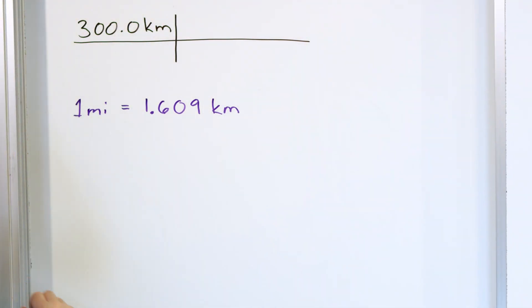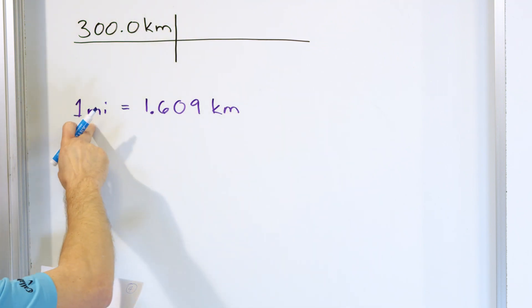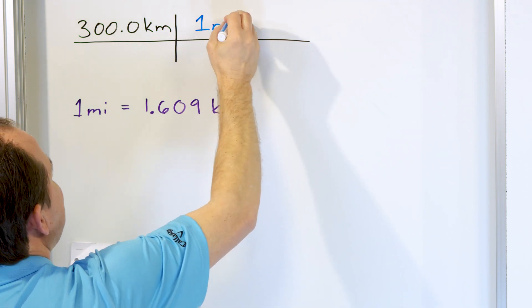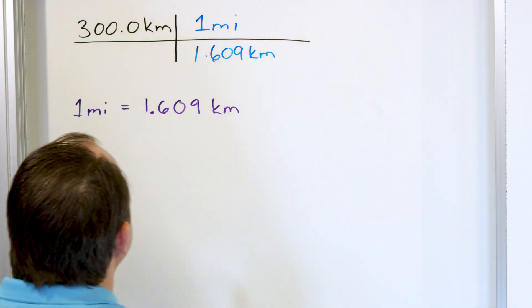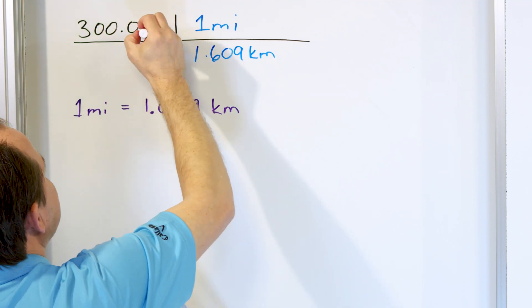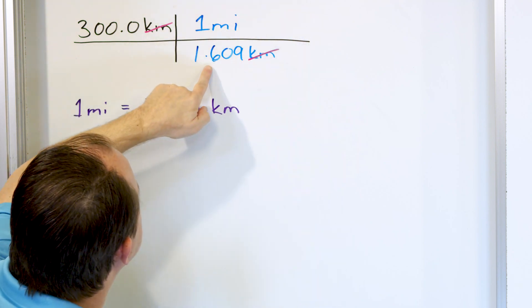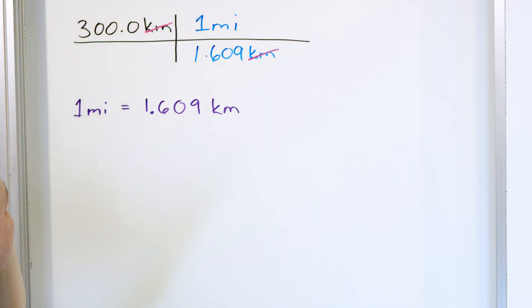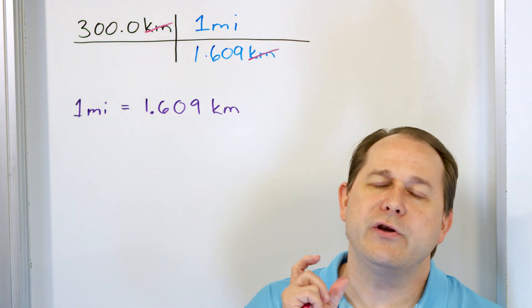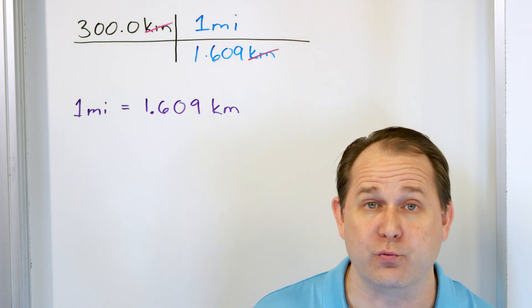We look this up in a textbook or on the web, and what we have to do is use this to get where we're trying to go. You're going to write this on your conversion table in such a way to cancel the kilometers, because the unit we want out is miles. So you write one mile on the top, equal to 1.609 kilometers on the bottom. What we're going to do is treat this as a kind of fraction multiplication — anything on the top cancels with anything on the bottom. You take the numbers and multiply the ones on top, then divide by the numbers on the bottom. So you take 300 times 1 and divide by 1.609. The only unit left is miles, and that is what we're trying to convert to.